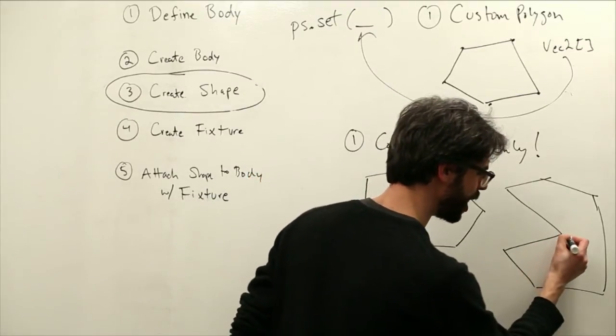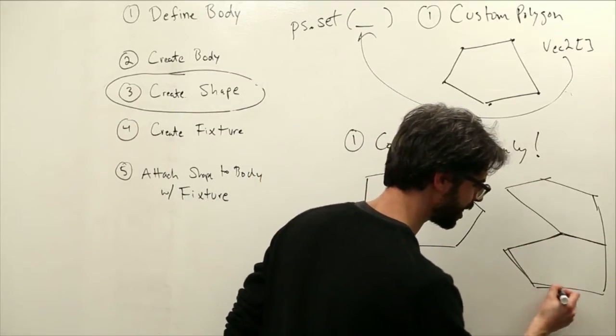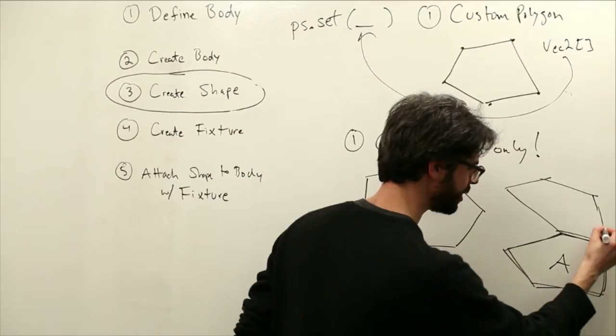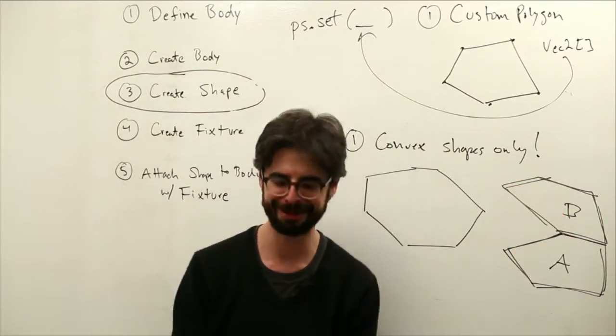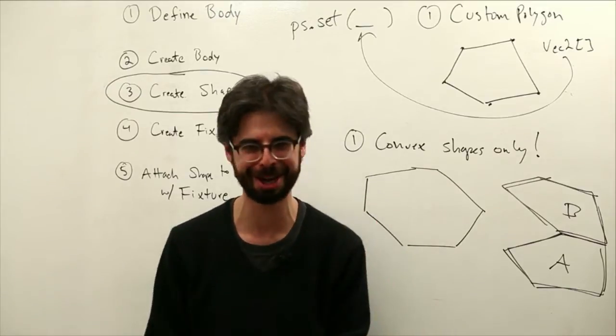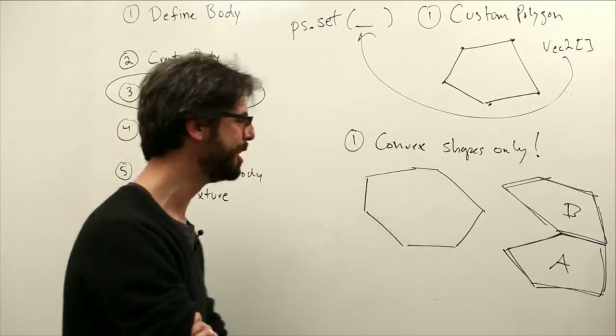So if I just draw a line here, this is a convex shape A, this is a convex shape B. Stick those two together, and we have a concave shape. I can never remember the difference between concave and convex. This is very much of a struggle, okay?